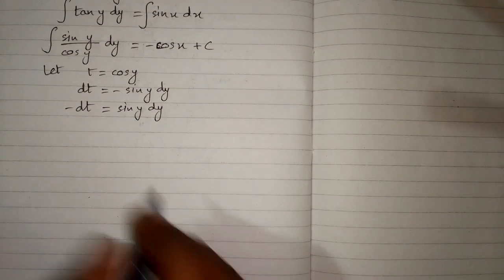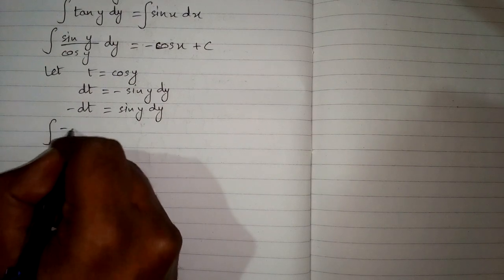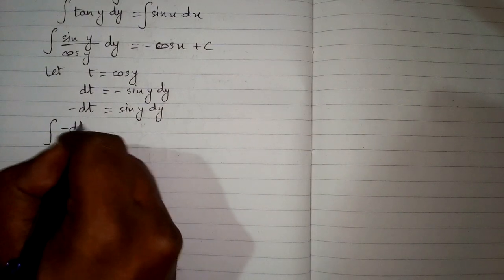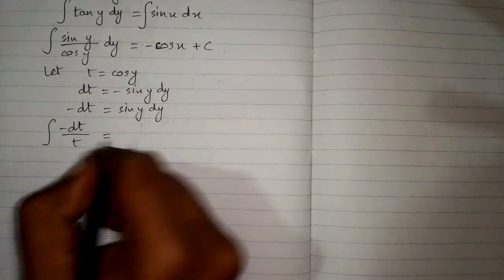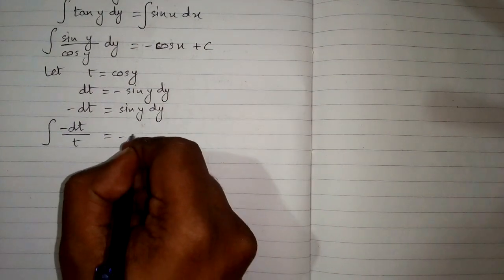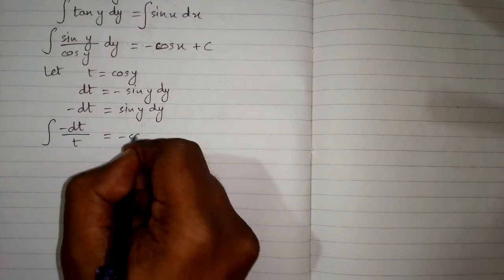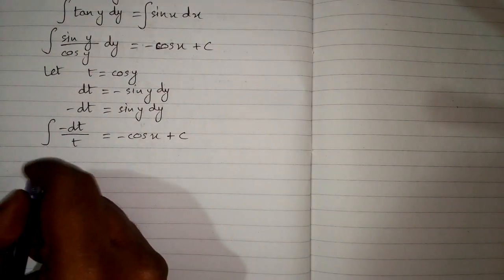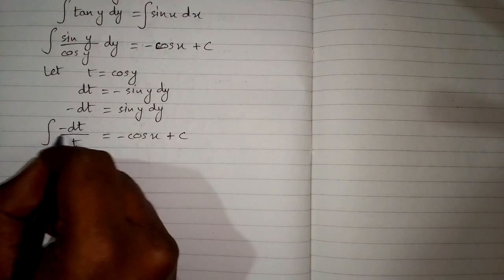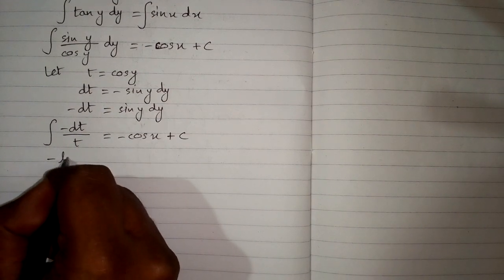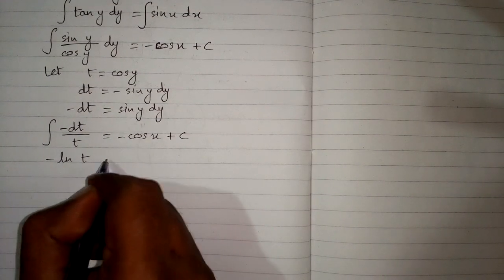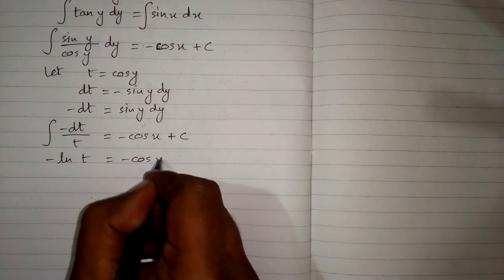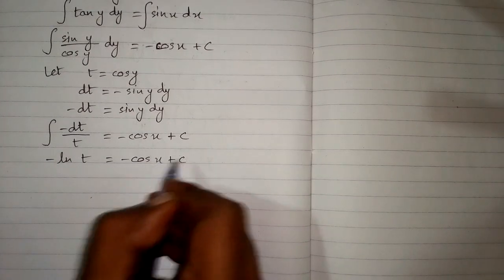The equation becomes the integral of minus dt upon t equals minus cos x plus c. The integral of dt upon t is ln t, so we have minus ln t equals minus cos x plus c.